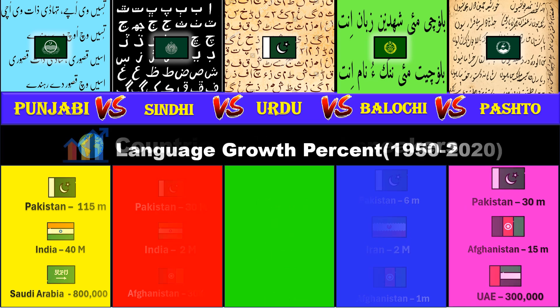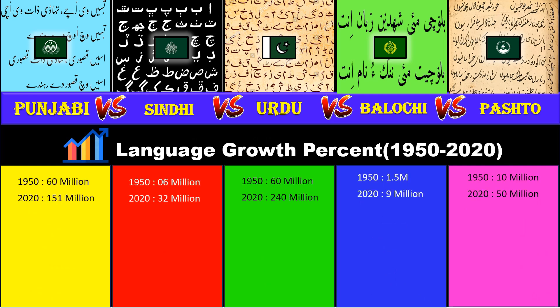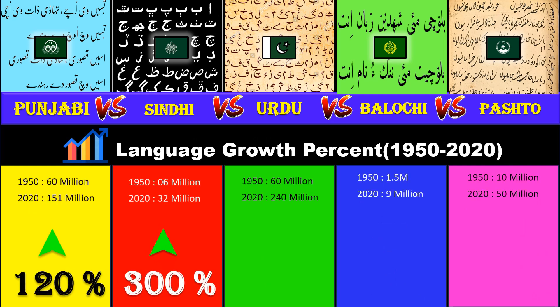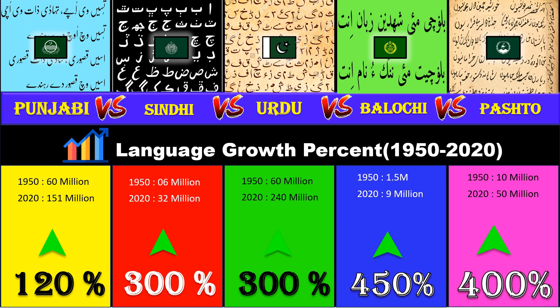Language growth percent between 1950 and 2020. Punjabi: 120 percent. Sindhi: 300 percent. Urdu: 300 percent. Balochi: 450 percent. Pashto: 400 percent.